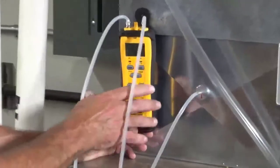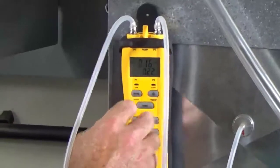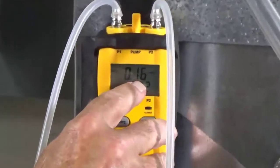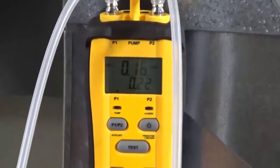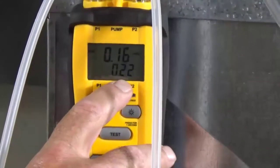So once the blower starts this is showing two different numbers. The P1 which is this tube here is showing our supply side is at 0.16 inches water column of static. The bottom number is our total external static at 0.22.